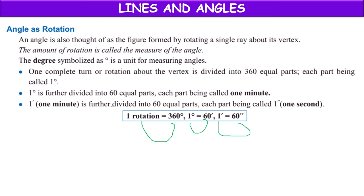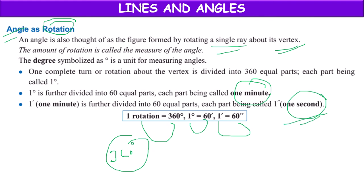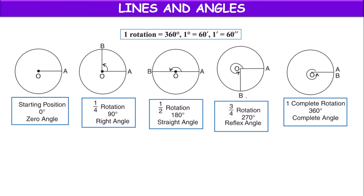So angle is also defined as a rotation by a single ray about its vertex. One complete rotation equals 360 degrees, 1 degree equals 60 minutes, and 1 minute equals 60 seconds. If the ray is at the starting point without any rotation, that angle is called a zero angle, because there is no rotation — the angle made by the ray is 0 degrees.